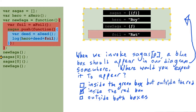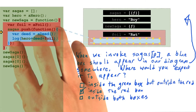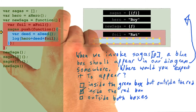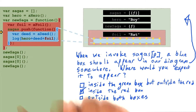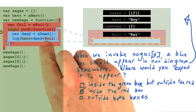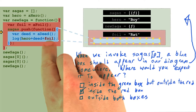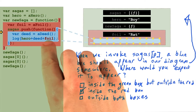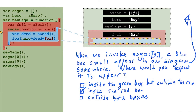The answer is that the blue box should appear inside the red box, because the context for a function will always be created as a child of the context that it was defined within. A simple way to think about this is that the word 'foil' should be allowed to appear inside the body of this function, because it's a variable from the surrounding context.